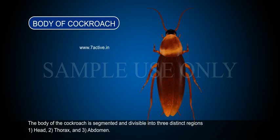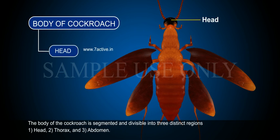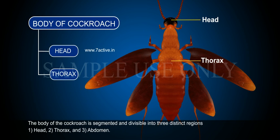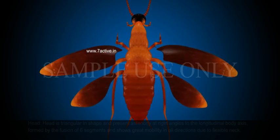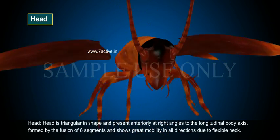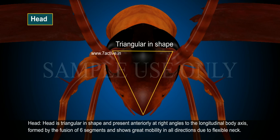The body of the cockroach is segmented and divisible into three distinct regions: 1. Head, 2. Thorax, and 3. Abdomen.